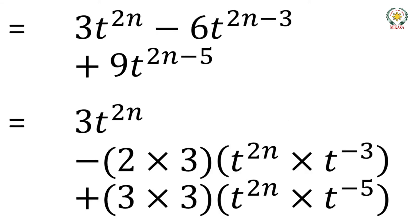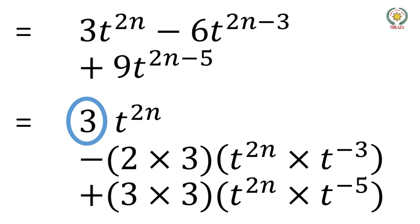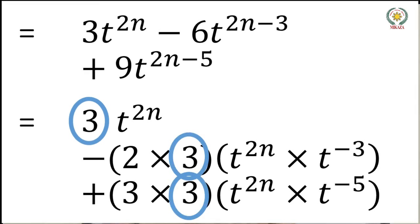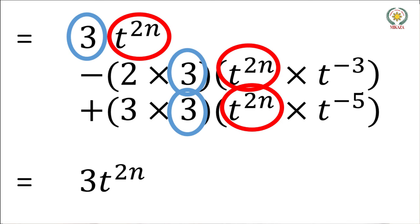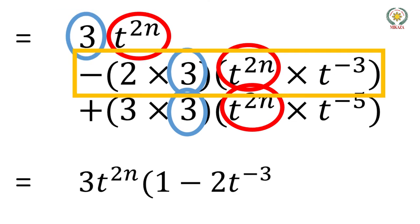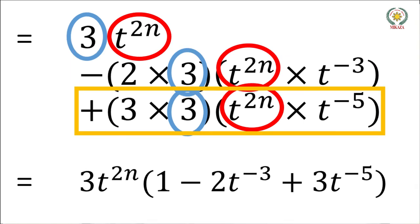Now look here. First, take out the common factor. You will take out 3 as the common factor. We take out 3t to the power 2n as the common factor.